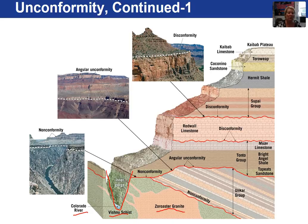Which is older — the schist or the granite? Based on the principle of cross-cutting relations, the Vishnu Schist has to be older because the granite is intruding it. Therefore, if granite intrudes something, it is younger than whatever it is intruding.